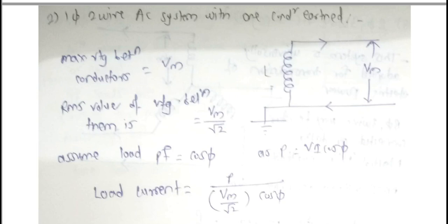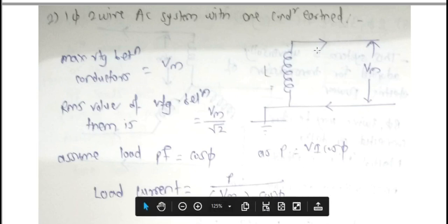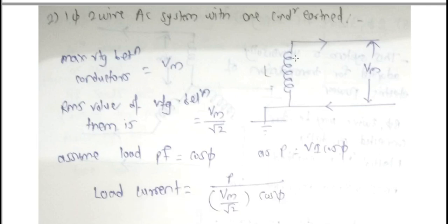This is a single phase two wire system with one conductor earthed. We consider this distribution system with load as inductance L. We are interested to supply the amount of voltage V. One conductor is earthed, and the maximum voltage between the two conductors is Vm.